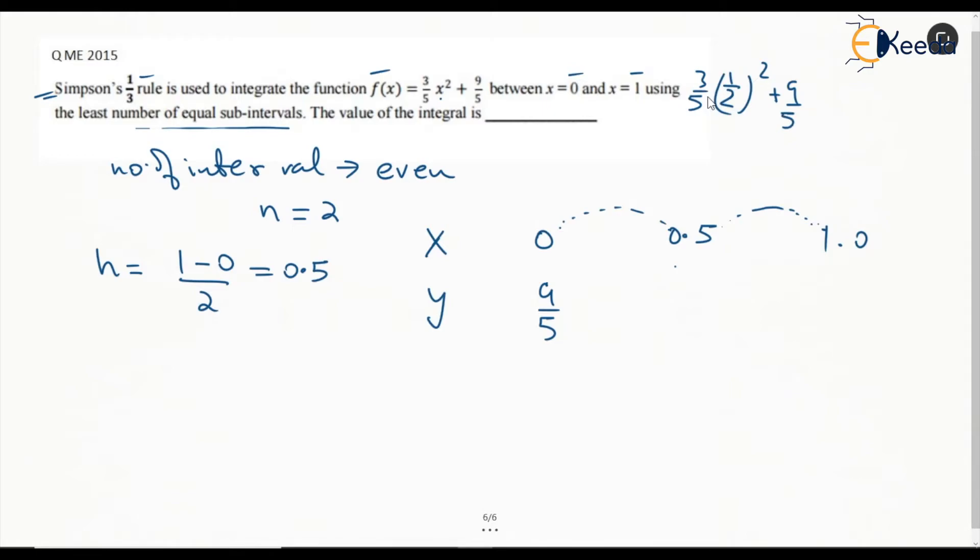This is approximately 1.95 in decimal. At x=1, this is 3/5 plus 9/5, which is 12/5 or 2.4. So these are the values we are going to have. This is x₀, x₁, x₂, and y₀, y₁, y₂.